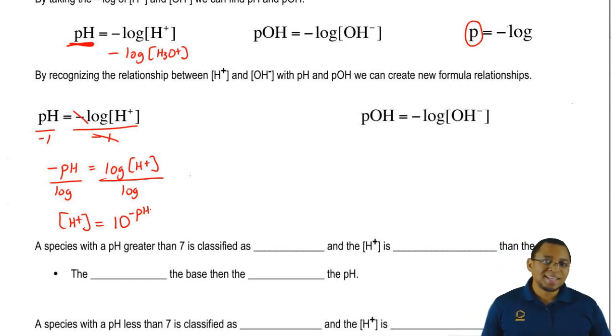So we just found a new relationship. We can say that H positive, the concentration of H plus ions, is equal to 10 to the negative pH.